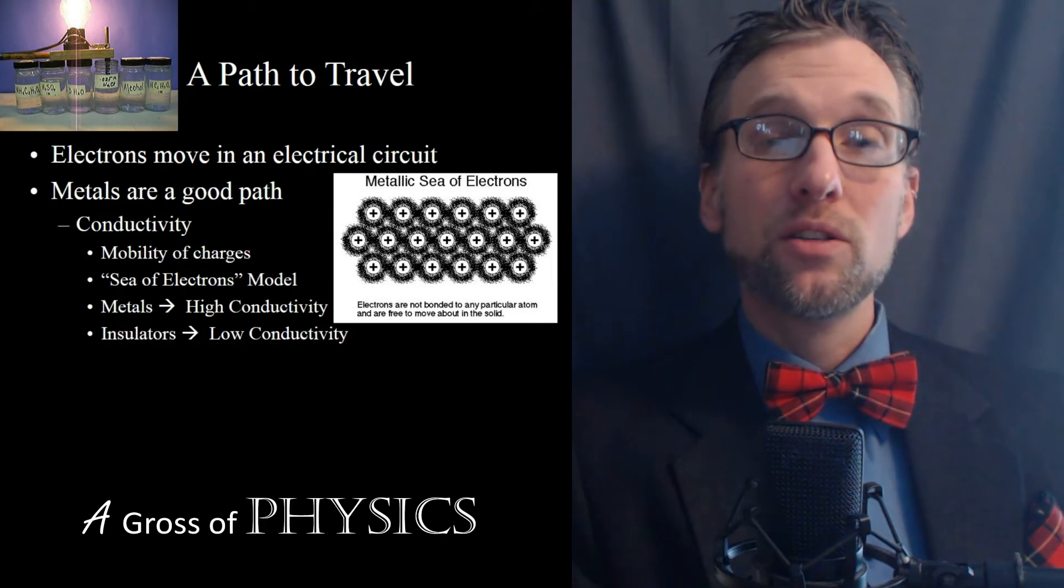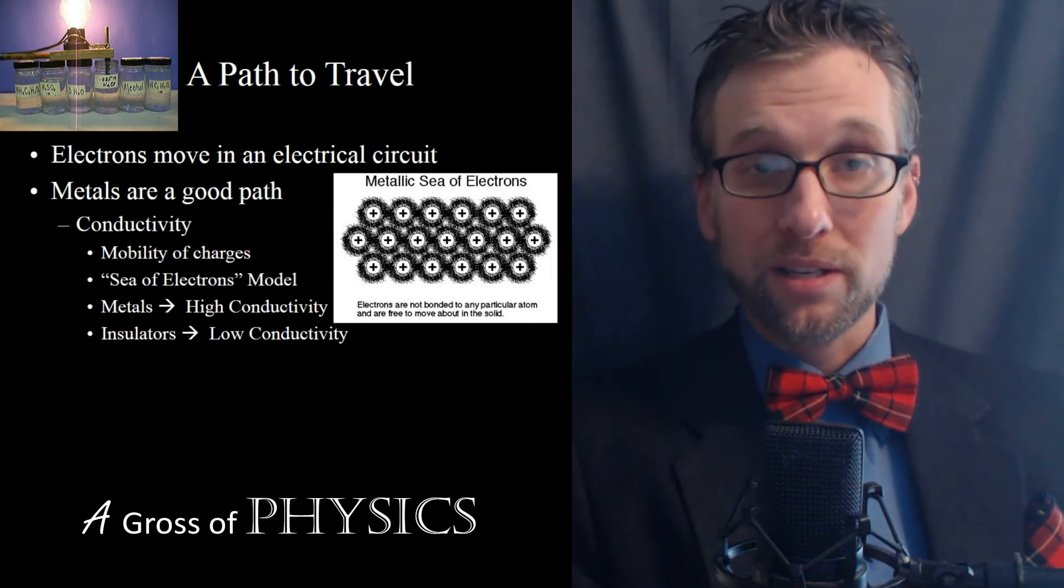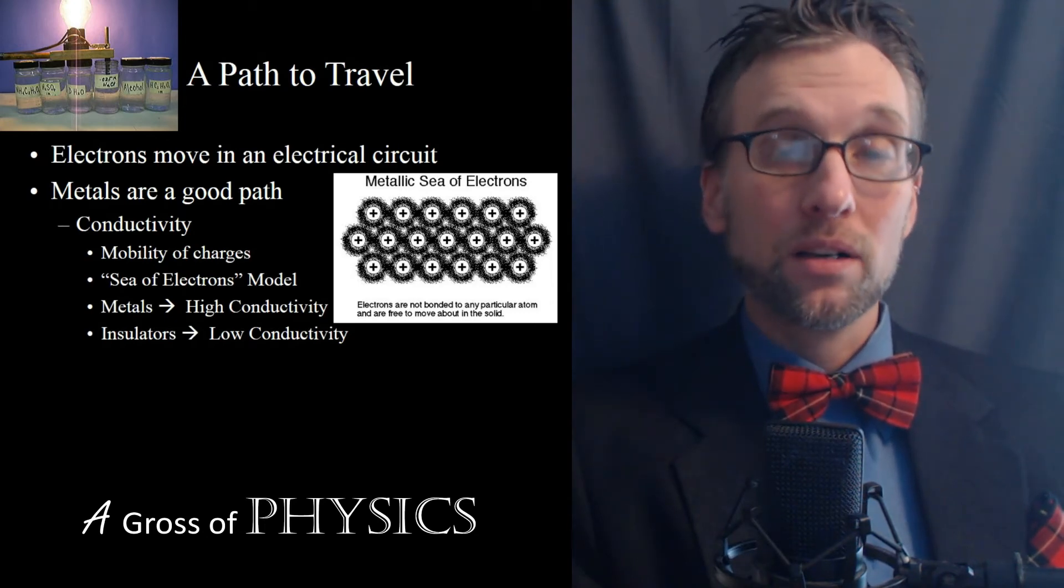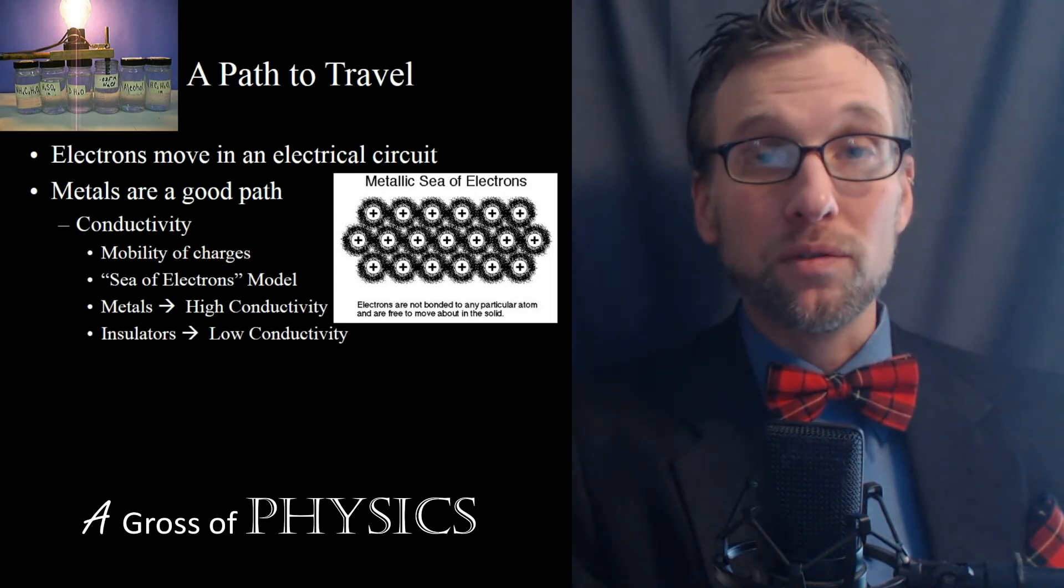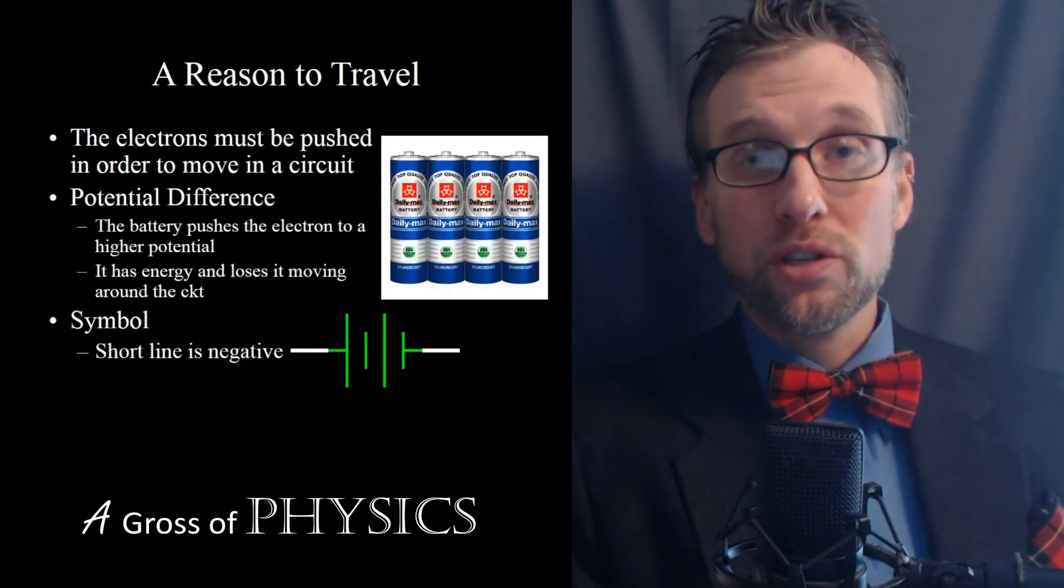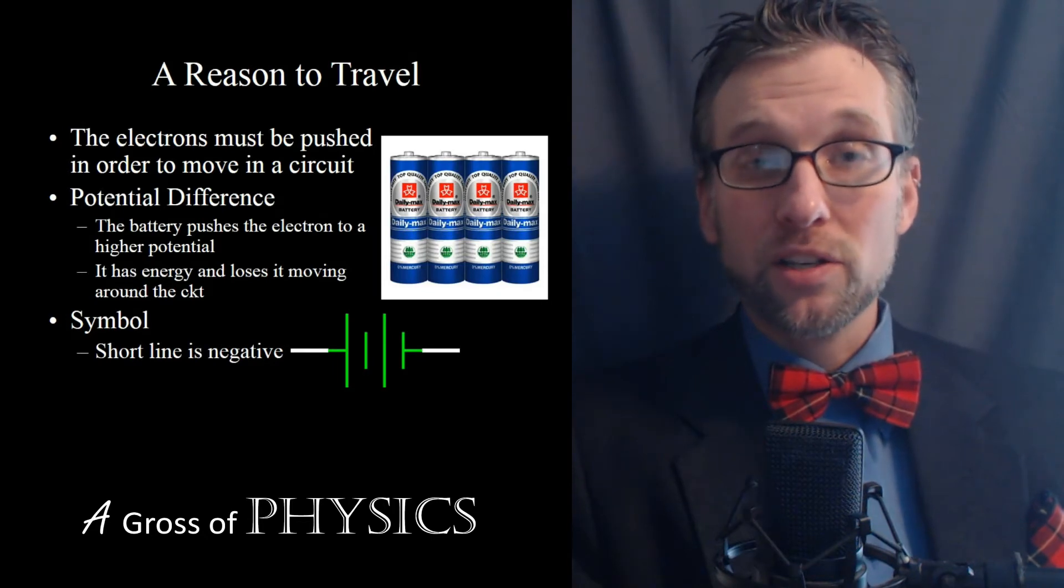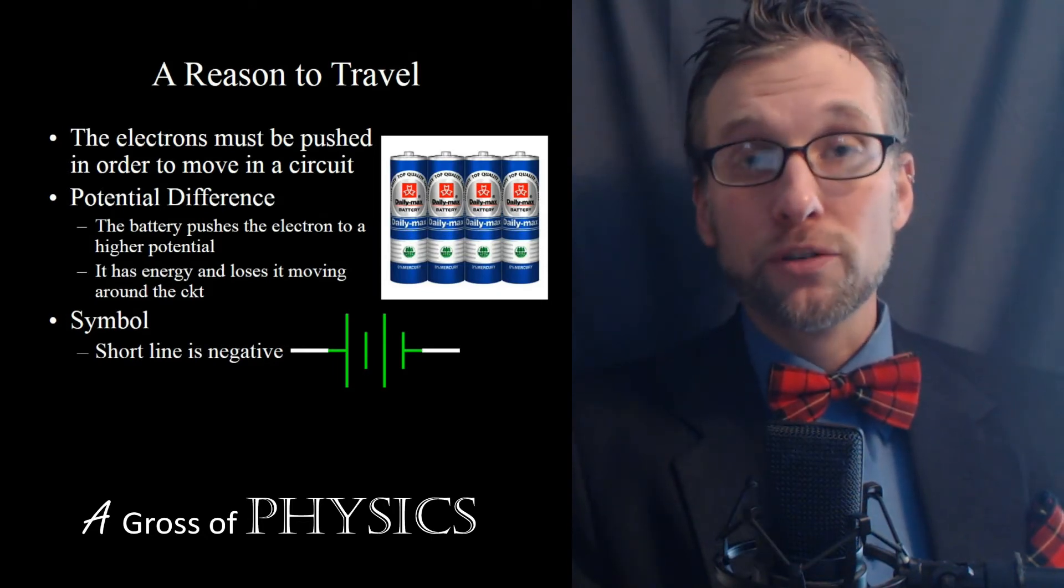Now the final thing that needs to be present in order to have a current to flow is the electrons need a reason to move. Electrons on their own will just sit there. Electrons in a wire aren't going to move without a push.